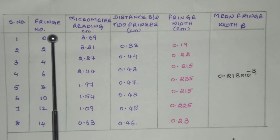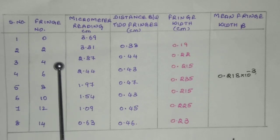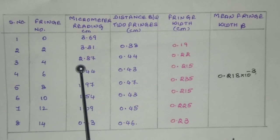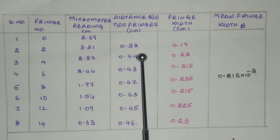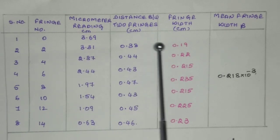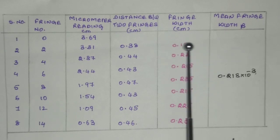From there onwards, we record these readings for the movement of every 2 fringes like 0, 2, 4, etc. For each of these, we record the micrometer reading and calculate the distance between two fringes. The length of one fringe width is recorded, and finally we calculate the mean fringe width, which is beta.